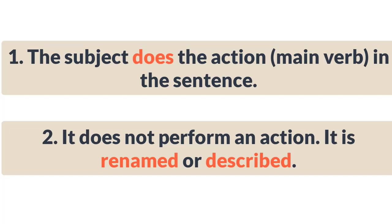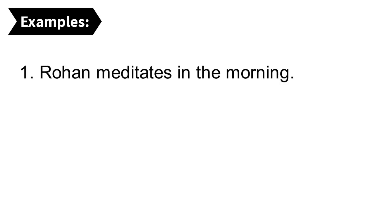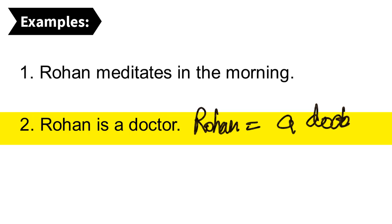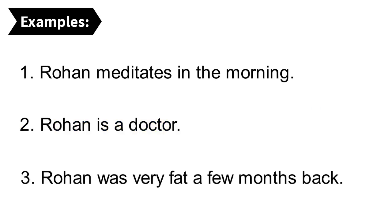Let me show you some examples. Example one: 'Rohan meditates in the morning.' Rohan does something, so the subject is Rohan — the person that performs the action 'meditates.' The subject here is the doer of the action. Second example: 'Rohan is a doctor.' Here we don't have any action. Rohan is being renamed — we are giving another name to Rohan, which is 'a doctor,' so Rohan equals a doctor.